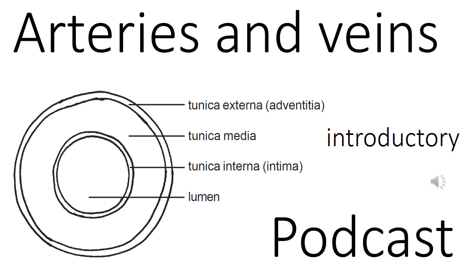A tunic is a word for a coat. We have three main layers: the tunica intima or the tunica interna, which is the inside layer; then the tunica media, the middle layer; and then the tunica externa, sometimes called the tunica adventitia, which is the external layer. Always in the middle, the hole down the middle is called the lumen. The lumen is the key point of an artery or a vein because the blood flows through the lumen in the middle of these tube-like vessels.